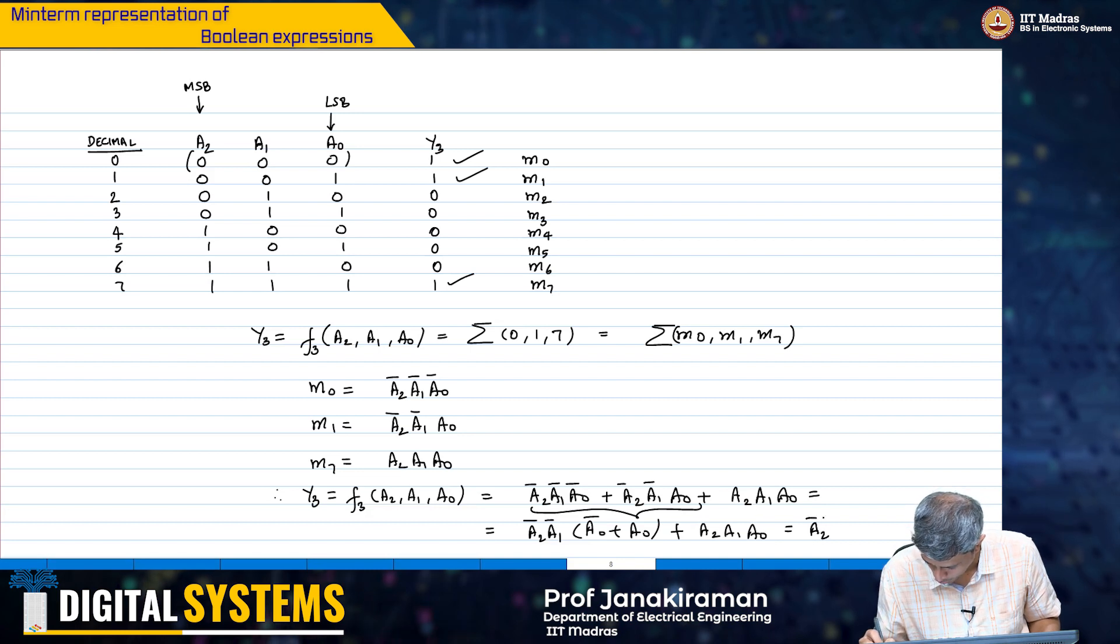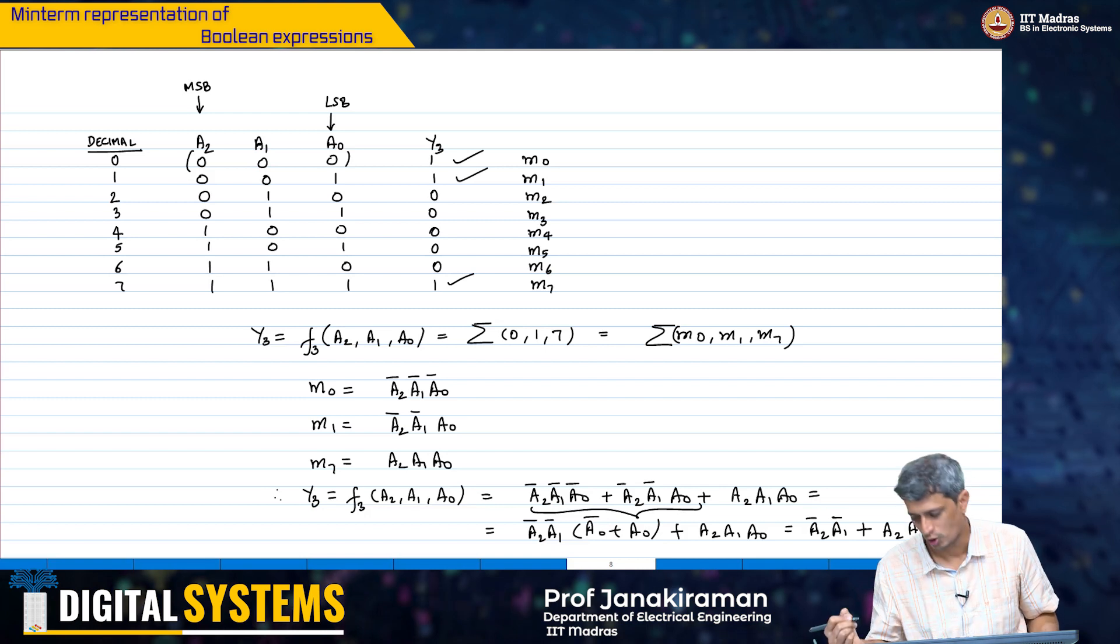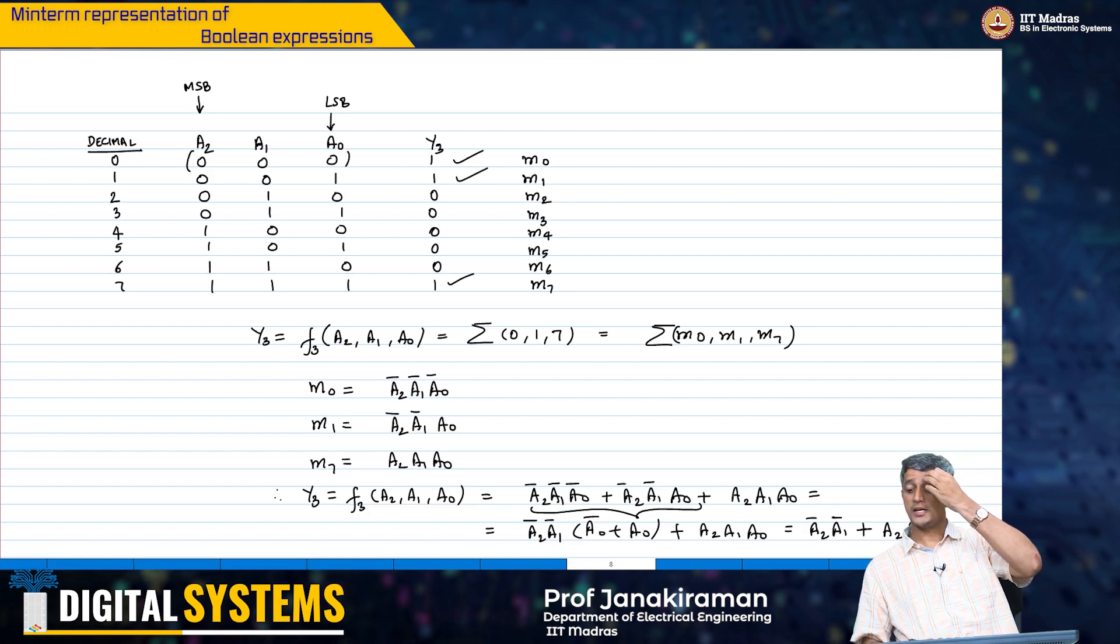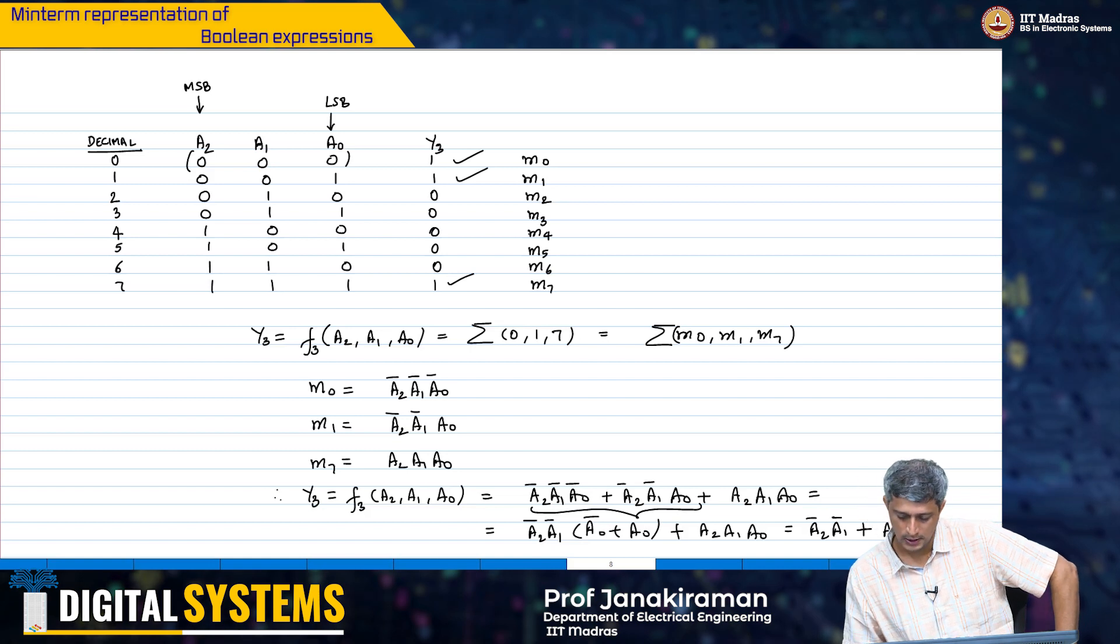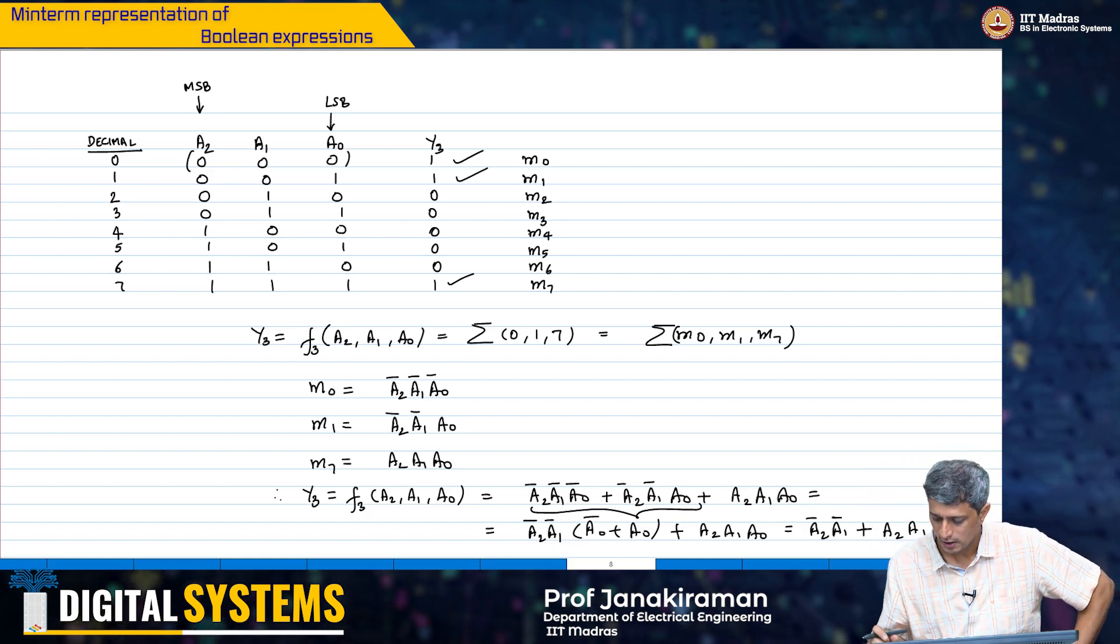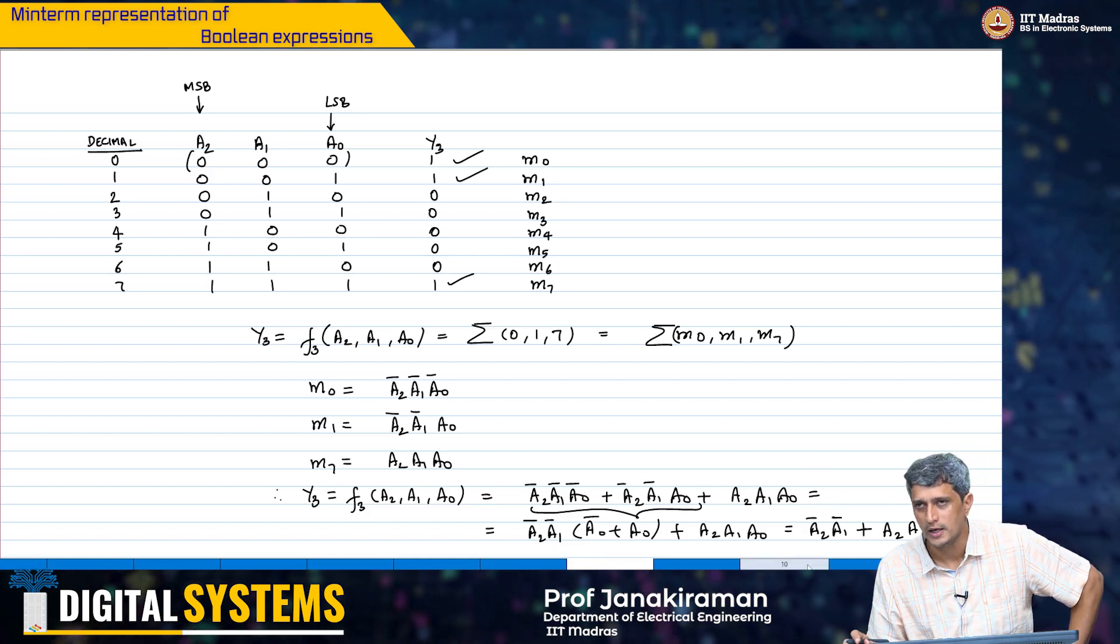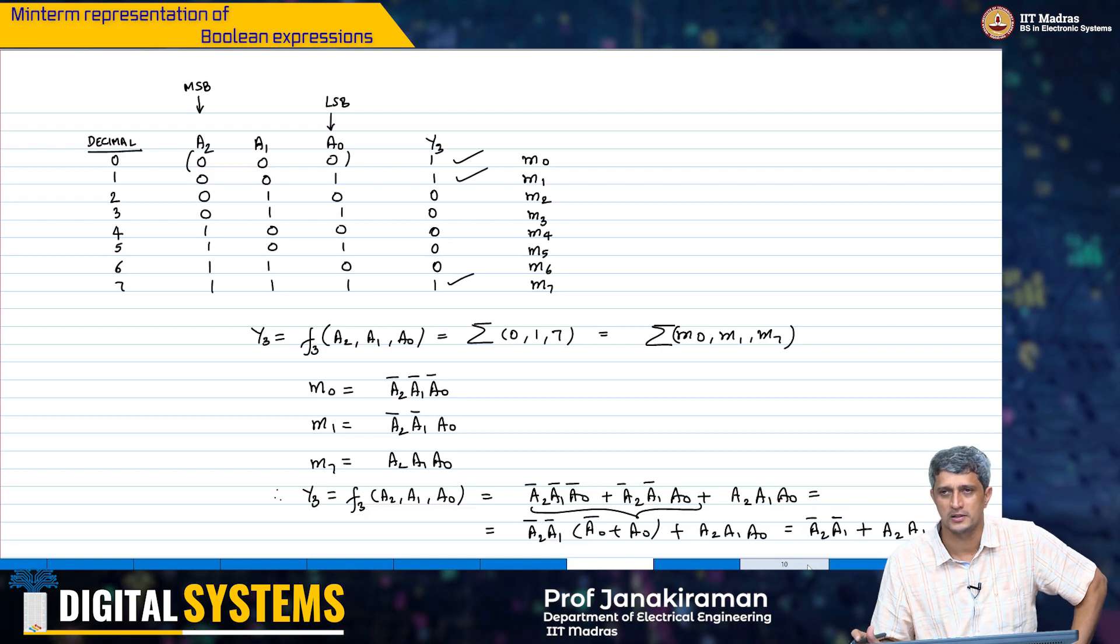And therefore, this I can write it as a2 bar, a1 bar plus a2, a1, a0. Now, the question really is, is this the simplest form in which we can write this? That is really not clear yet. We do not know if you can simplify this any further. Does it make sense to implement this in a different way?